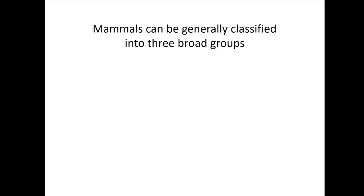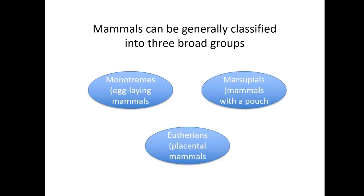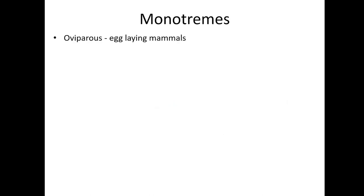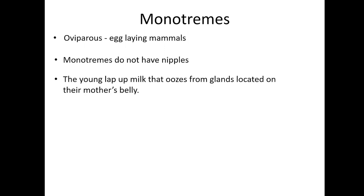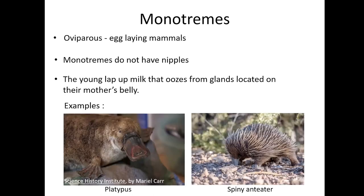Mammals can be divided into three groups: monotremes, marsupials, and eutherians. Monotremes are the only oviparous mammals — the female lays eggs that they carry in a pouch on the abdomen or keep warm in a nest. Like all mammals, monotremes have hair and produce milk, but they lack nipples. When the young hatch, they are nourished by milk produced by the mother's mammary glands, secreted through pores on the surface of the abdomen. Examples of monotremes are the platypus and the spiny echidna.